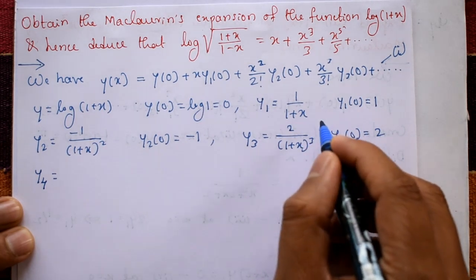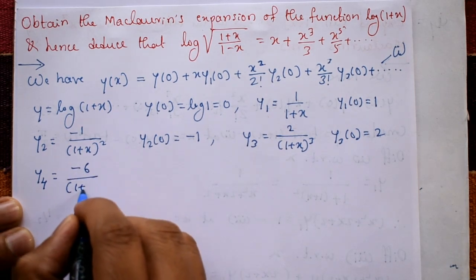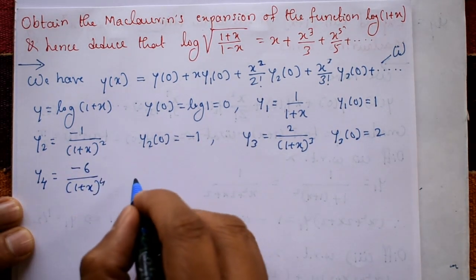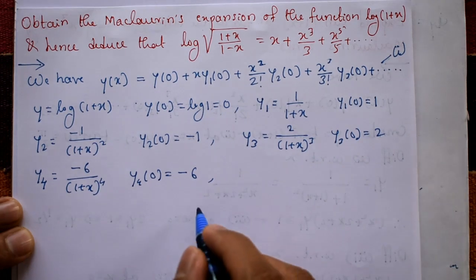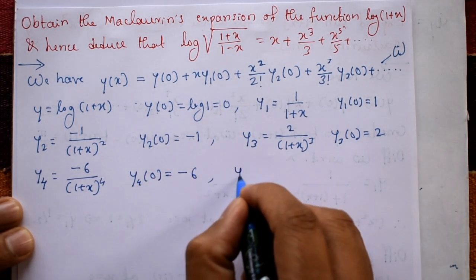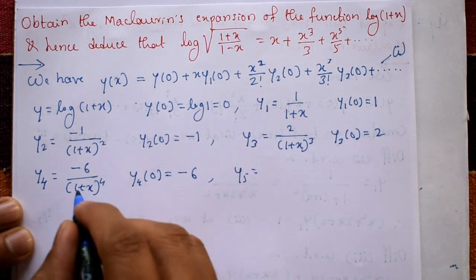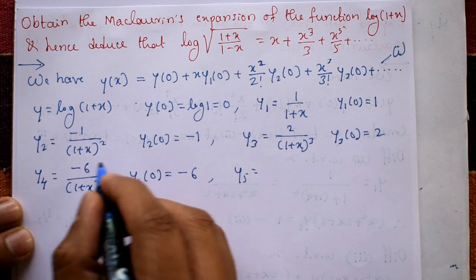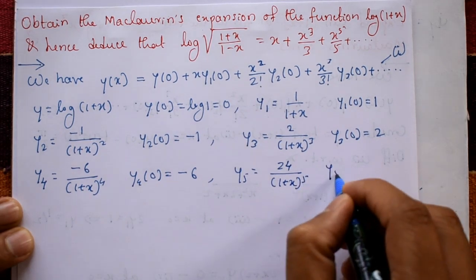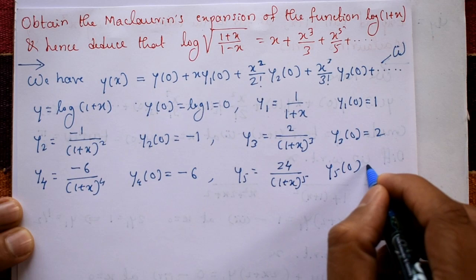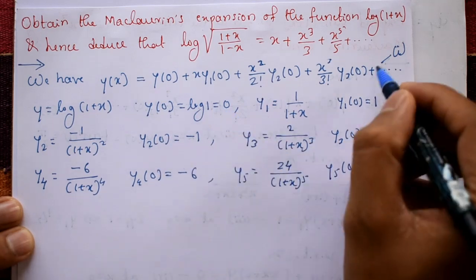Differentiate again: y₄ = −6/(1+x)⁴. Put x = 0: y₄(0) = −6. Differentiate once more: y₅ = 24/(1+x)⁵. Put x = 0: y₅(0) = 24.